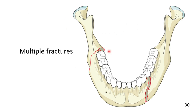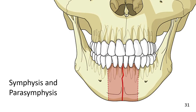Multiple fractures are those involving more than one anatomic location of the mandible. Regarding symphysis and parasymphysis, these are fractures in the area between the canines.